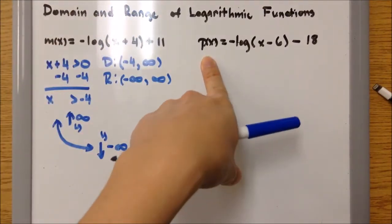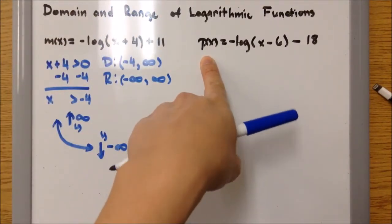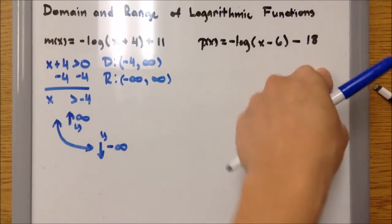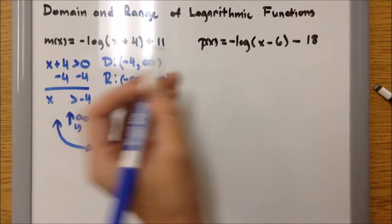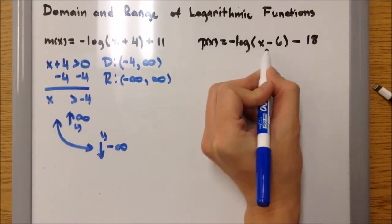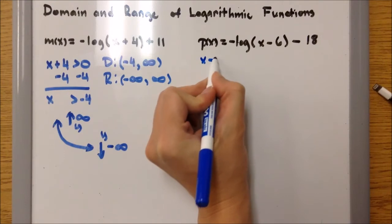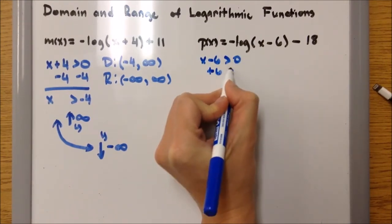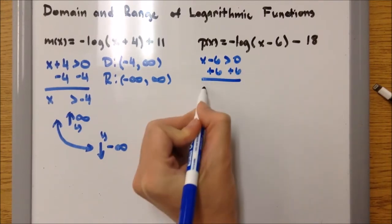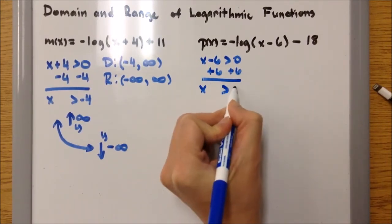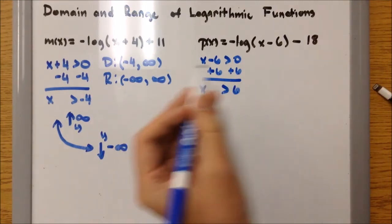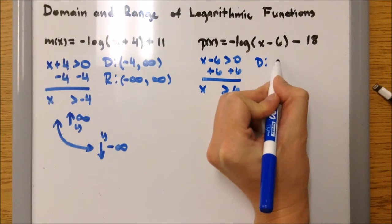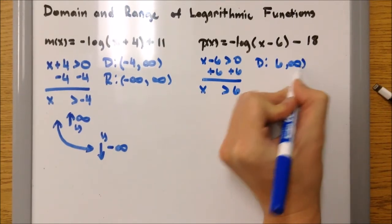Example 4: P of x equals negative log of x minus 6, minus 18. To find the domain, x minus 6 has to be greater than 0. Solving for x by adding 6 to both sides gives x greater than 6. So our domain is 6 to infinity with parentheses.